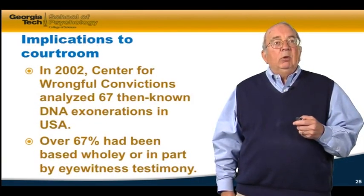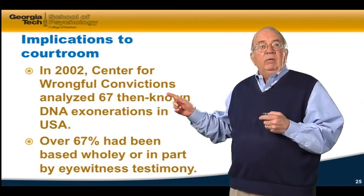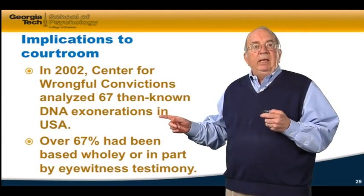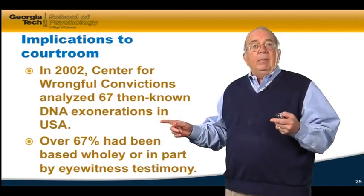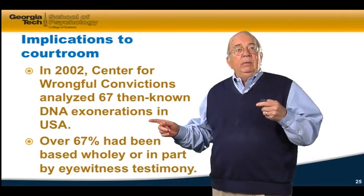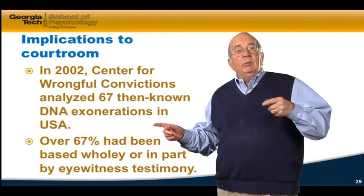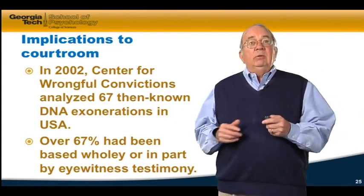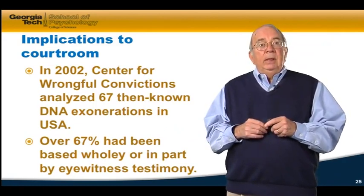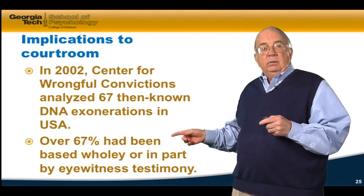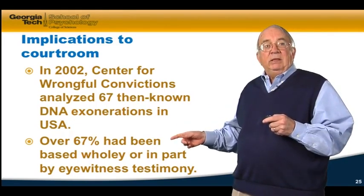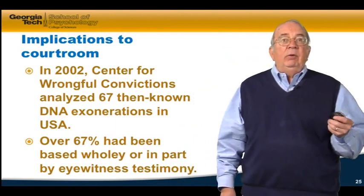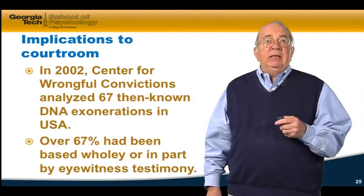This has implications for the courtroom. In 2002, the Center for Wrongful Convictions analyzed 67 cases where exoneration was made by DNA evidence in capital crime cases in the United States. Convictions were overturned because DNA evidence did not support what was presented at trial. They found that over two-thirds of those wrongful convictions were based wholly or in strong part on eyewitness testimony, questioning the value of eyewitness identification of suspects in crimes.